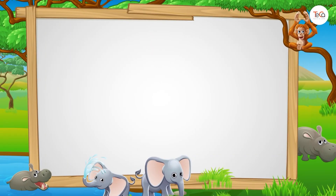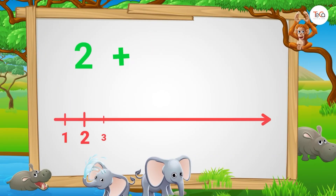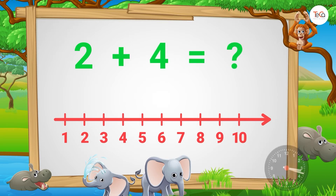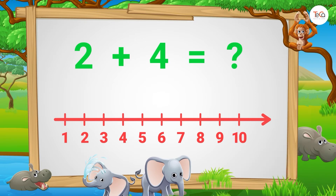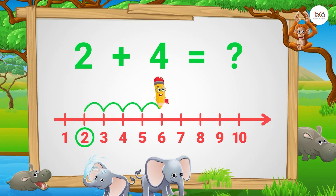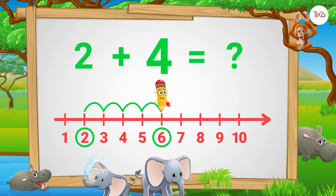Next, to find 2 plus 4, start from number 2. Then jump four numbers to the right. Here we stop at number 6. So, 2 plus 4 equals 6.